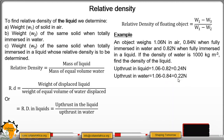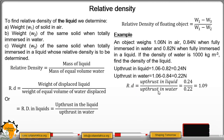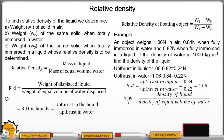Relative density equals upthrust in liquid divided by upthrust in water: 0.24 divided by 0.22 equals 1.09. Since the question asks for the density of the liquid, we use: relative density equals density of liquid divided by density of water. So 1.09 equals ρ divided by 1000. Multiplying both sides by 1000 gives ρ equals 1090 kg/m³.